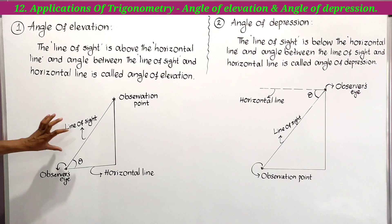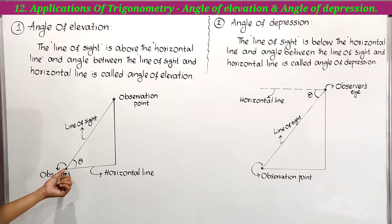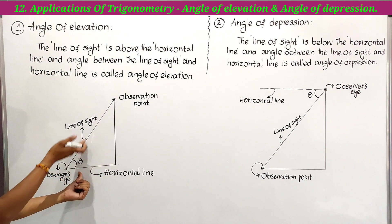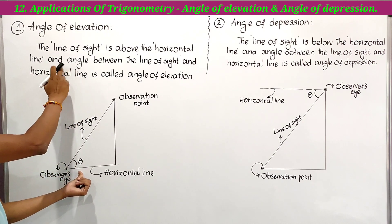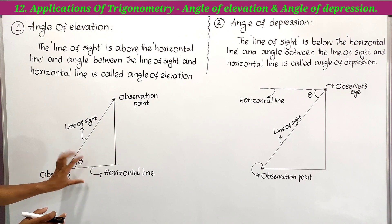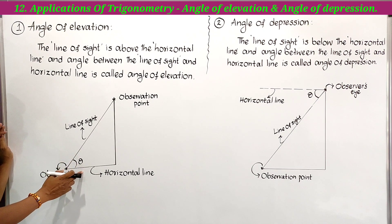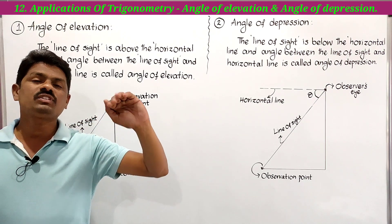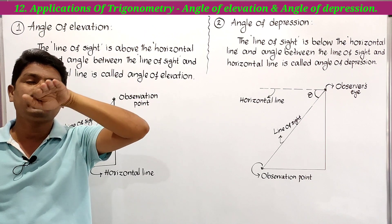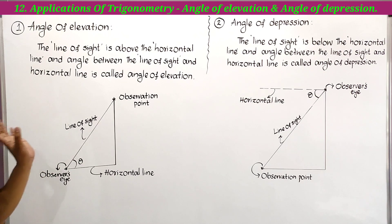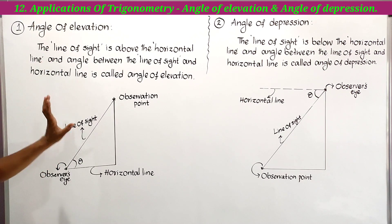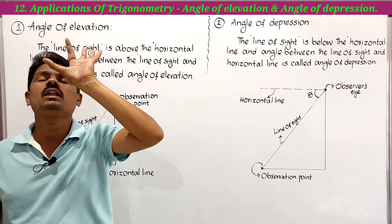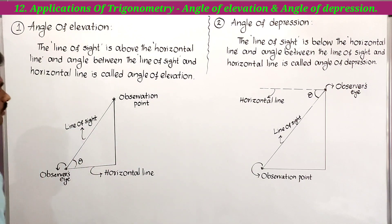The line of sight is above the horizontal line. The angle between the line of sight and the horizontal line is called the angle of elevation. So once again: the line of sight is above the horizontal line, and the angle between the line of sight and the horizontal line is called the angle of elevation. This is the angle of elevation.